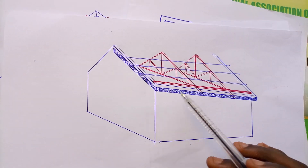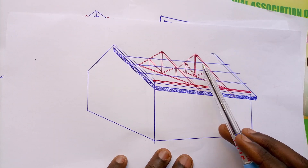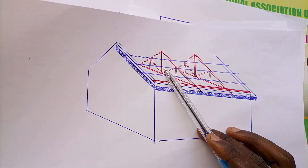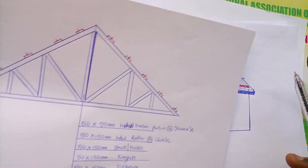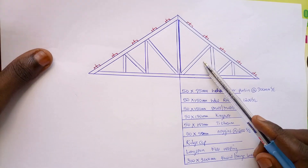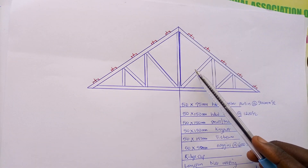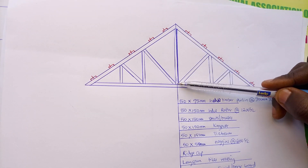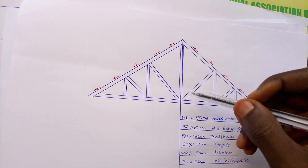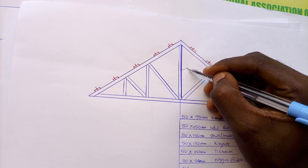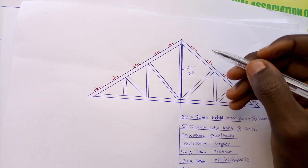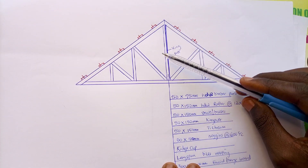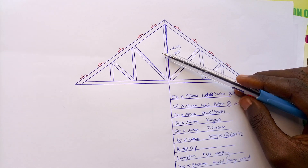This is a roof carcass. It has a gable end, which is why it looks like this. Let me pick out one of these trusses and explain. This single truss here is composed of different elements. The longest element that determines the height of the roof is called the king post. The king post is the longest vertical element that determines the height of the pitch roof with gable ends.